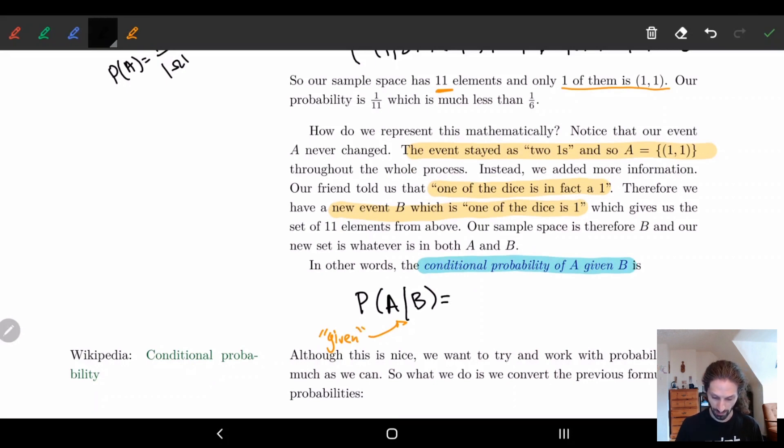And so let's think about this. We know our sample space. Our sample space is the new set B. But our space above is actually going to be A intersect B. Now the example I gave doesn't really demonstrate why this is.